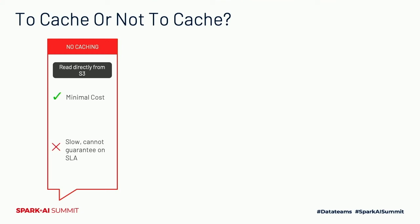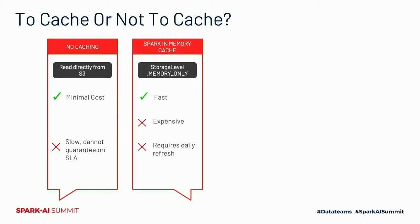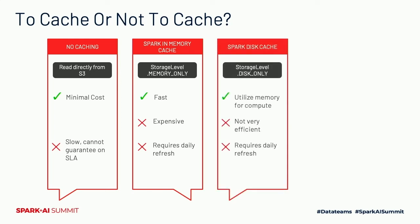If we read data directly from S3 for every forecast request, there's no cost but it will be terribly slow and we cannot guarantee the SLA. Spark's in-memory cache would be lightning fast, but it requires a huge cluster to cache the entire dataset at our scale, and we'd need to refresh it daily which is tedious. The obvious alternative is disk caching — disk is cheaper than memory and frees up memory for compute — but it's not very efficient. We found that disk caching alone would require at least 35 c4.2xlarge nodes. Can we do better and reduce cost?